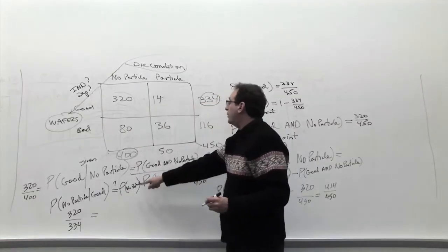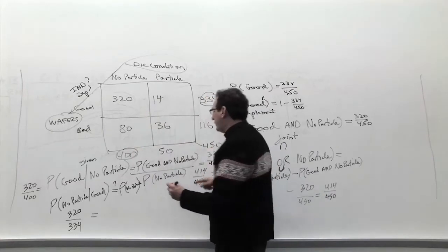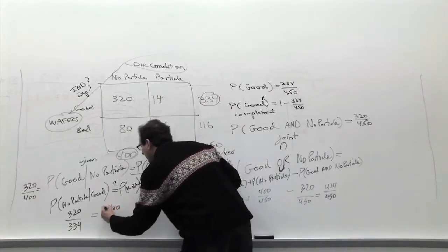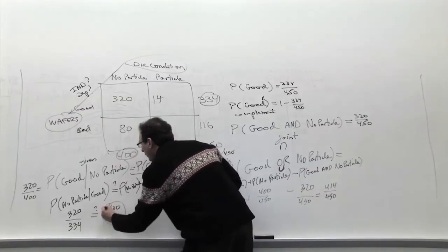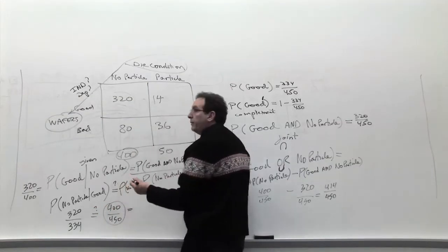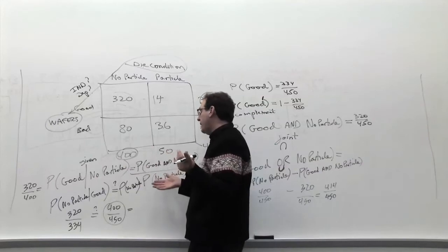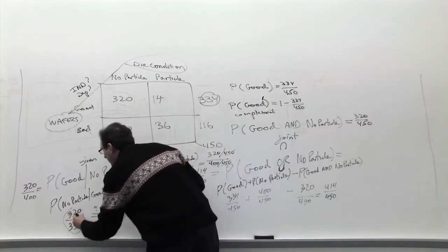320 out of 334. So the left side of the equation is 320 out of 334. What's the right side of the equation? How many have no particles? 400 out of 450. Are these two fractions or decimals the same? Well, the only way to really know for sure is by, besides cross-multiplying, is by changing them into decimals. So change both of them into decimals.